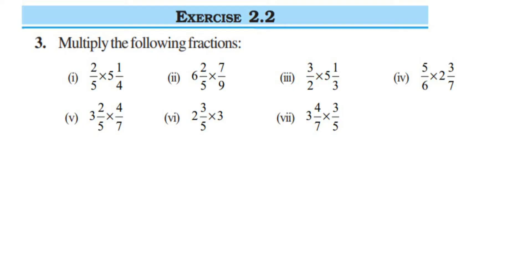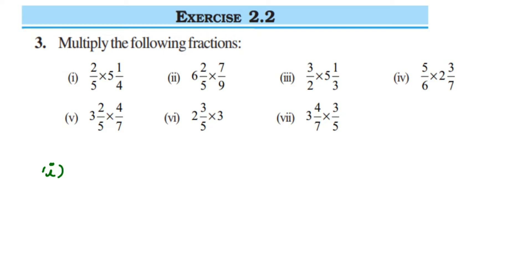Hello everyone, here I am doing Exercise 2.2, Fractions and Decimals of Class 7 - this is the third question. The question says: multiply the following fractions. When you multiply two fractions, multiply the numbers in the numerators and denominators. But here the questions have a mixed fraction, so let's solve. We have 2/5 multiplied by 5¼. We have to first convert this mixed fraction into an improper fraction.